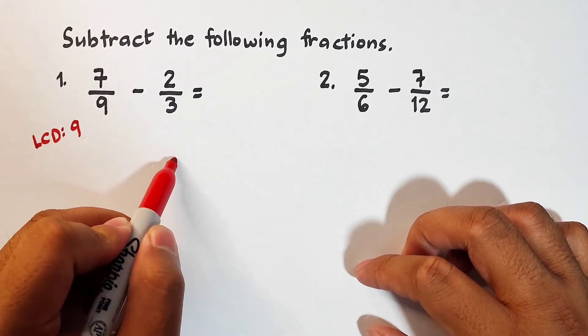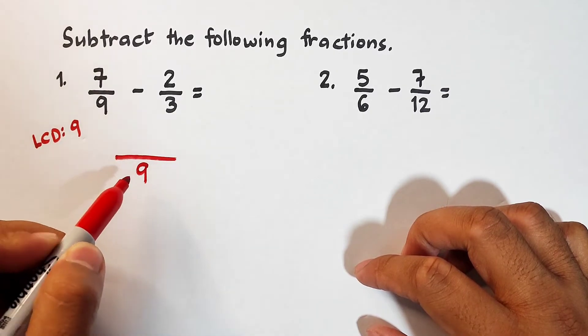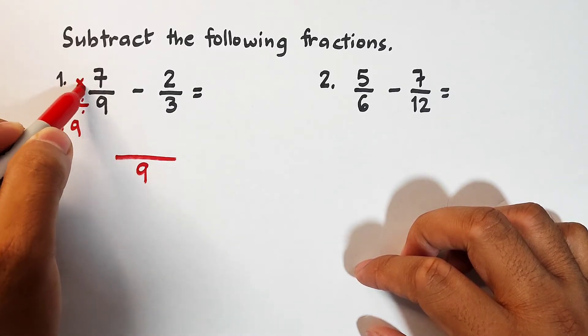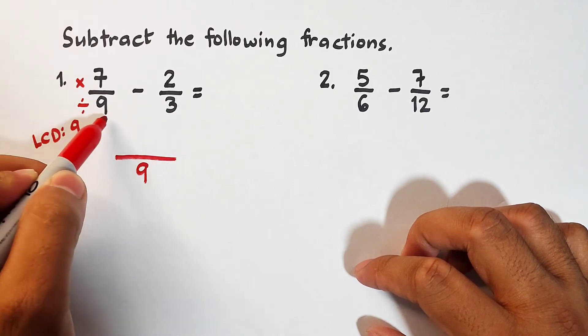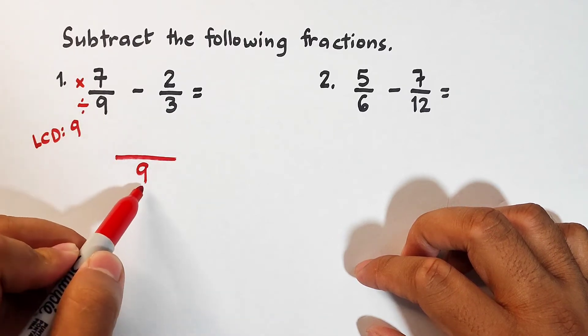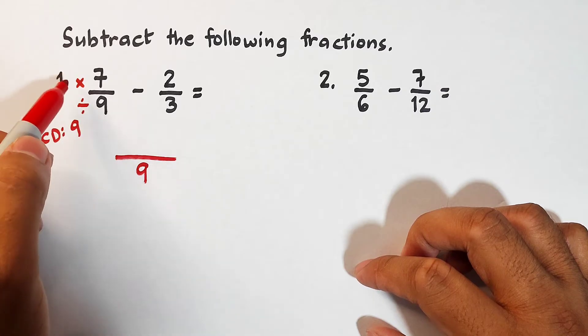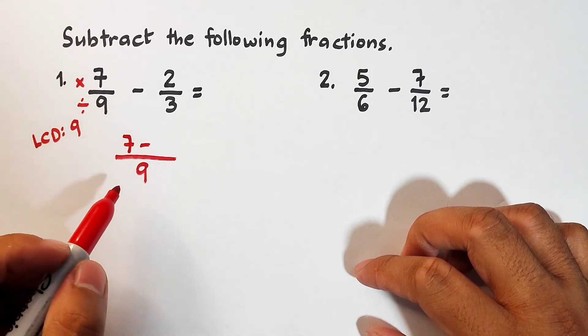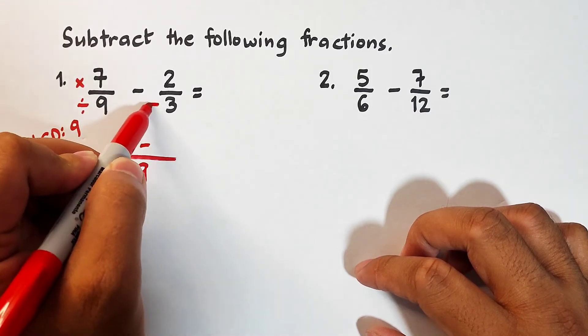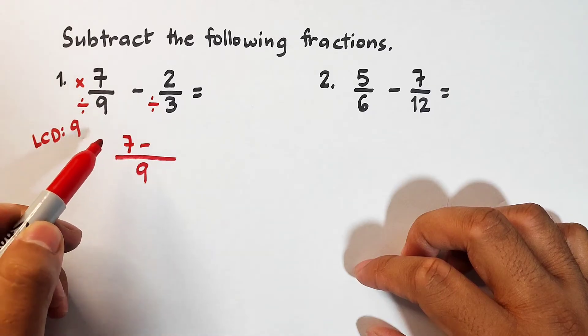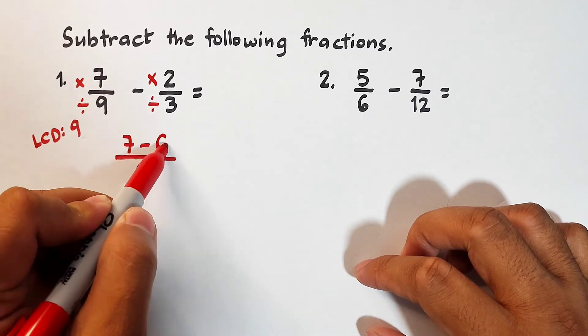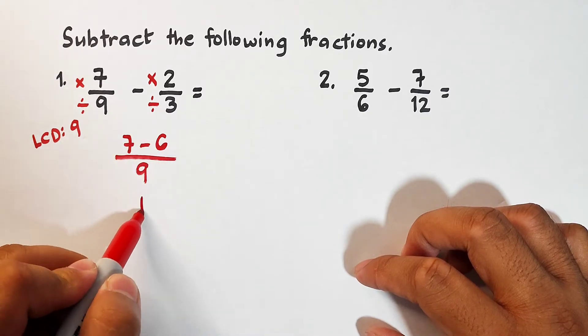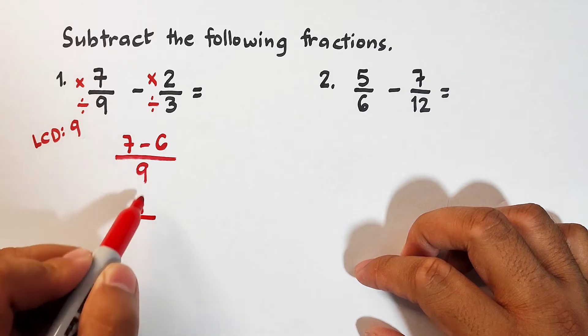We will put here your 9 as your denominator, and what's next is we will divide and multiply. 9 divided by 9 is 1, times 7, that is 7. Then minus 9 divided by 3 is equal to 3, times 2, that is equal to 6. So, what we have here is 7 minus 6, that is equal to 1. Copy your denominator, which is 9.